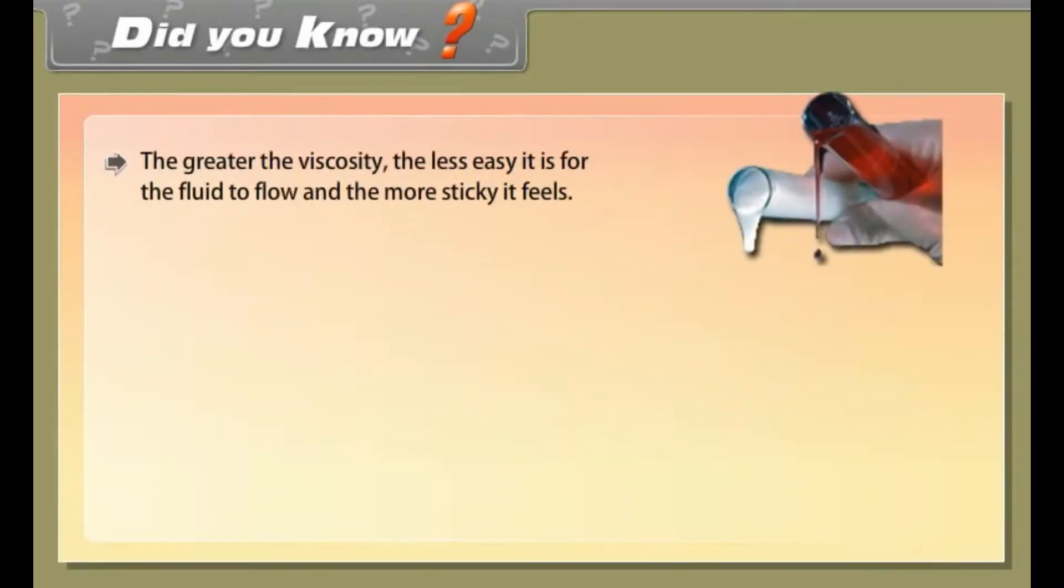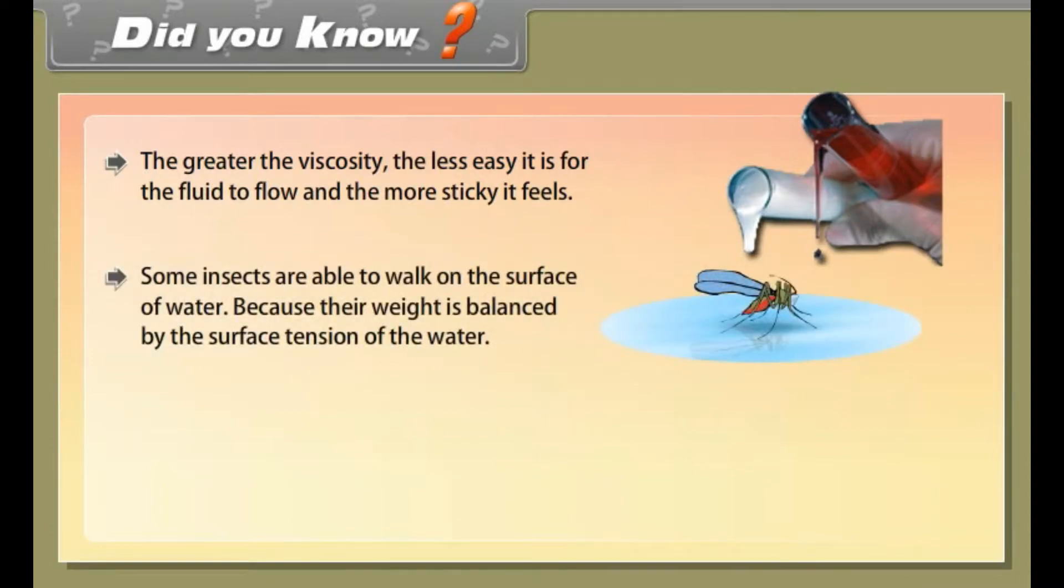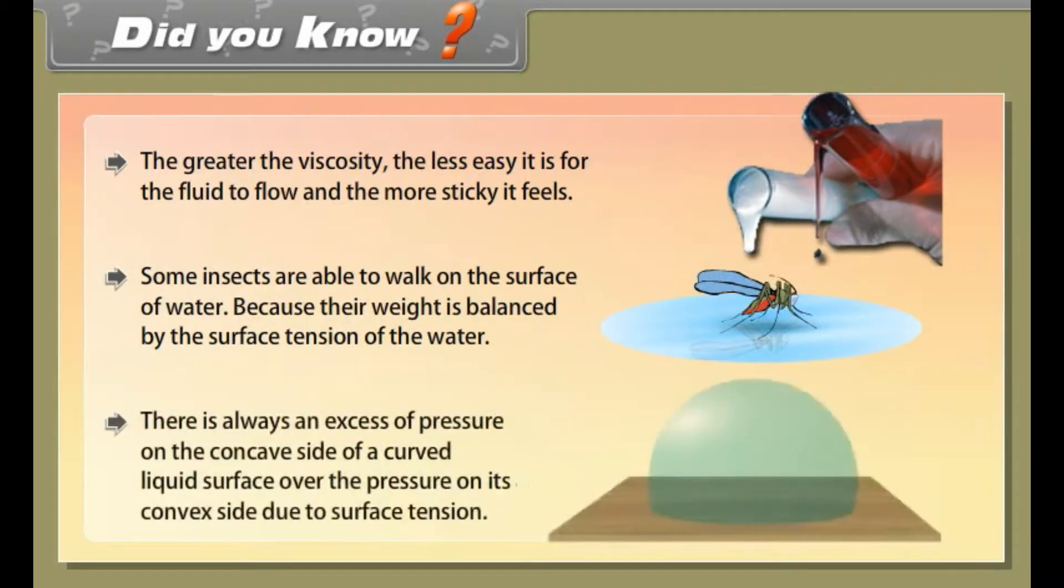Did you know? The greater the viscosity, the less easy it is for the fluid to flow and the more sticky it feels. Some insects are able to walk on the surface of water because their weight is balanced by the surface tension of the water. There is always an excess of pressure on the concave side of a curved liquid surface over the pressure on its convex side due to surface tension.